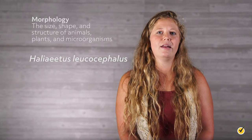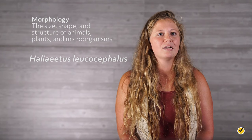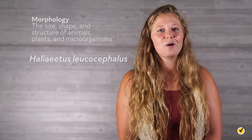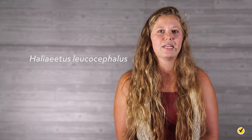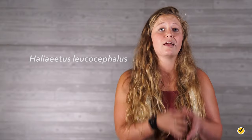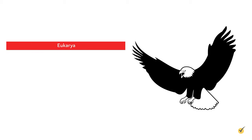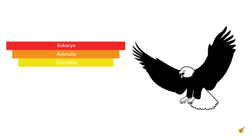Keeping morphology in mind can be a good way to help you memorize and understand the breakdown of how things are organized. Let's go through the entire classification system for bald eagles together, starting at the domain and working our way down. Since they are eukaryotes, they belong to the eukaryote domain. For kingdom, they are part of the animalia taxon because they are multicellular, their cells don't have a cell wall, and they ingest food. For phylum, they are part of the chordata taxon because they are vertebrates with a spinal cord.